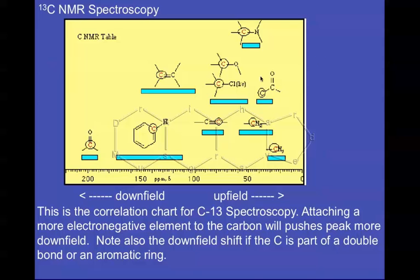Like proton spectroscopy, you can see that different carbons will appear in different locations on their correlation chart. Now, there are a couple of differences between carbon-13 and proton NMR. First, we're looking at carbons, not protons. Secondly, if you look at the scale, we're looking at about 0 to 200. So the scale is about 10 times what it was for the proton.